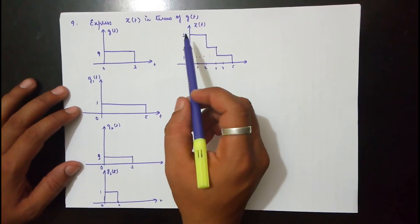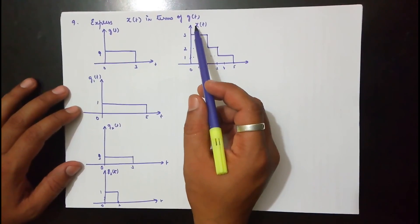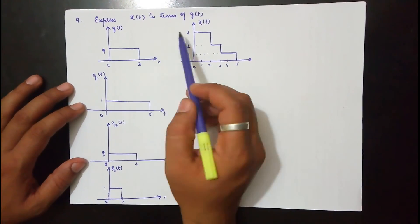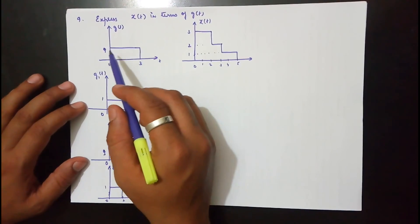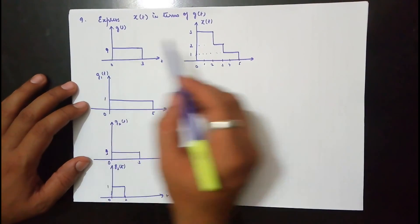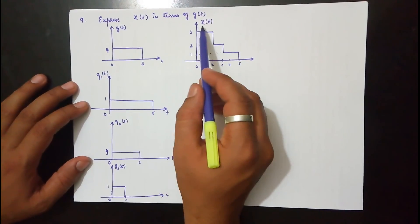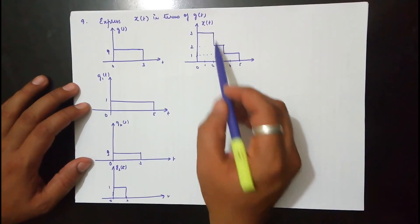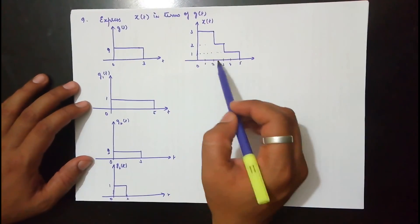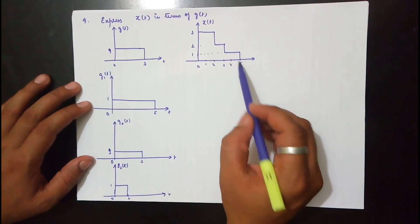In the next question, it is an extension of the previous question wherein you are asked to express x(t) in terms of g(t). In the previous case, g(t) was extending from 0 to 1. Here it extends from 0 to 3 with an amplitude of 1. x(t) extends between 0 to 5 with an amplitude of 3 from 0 to 2, then amplitude of 2 from 2 to 3, then amplitude of 1 from 3 to 5.